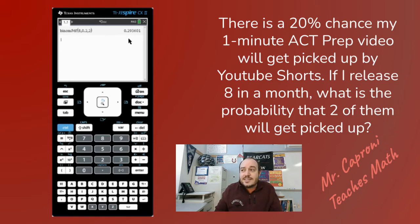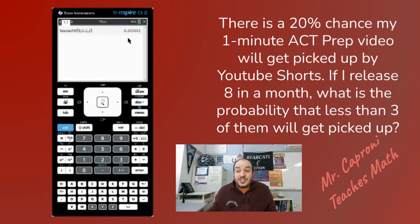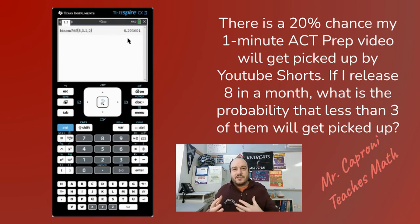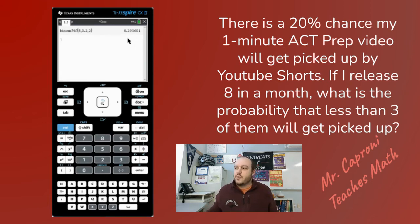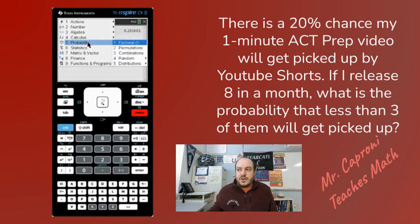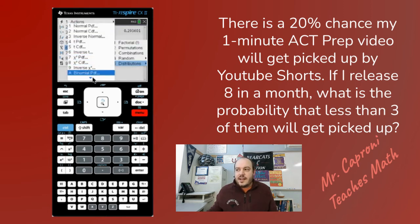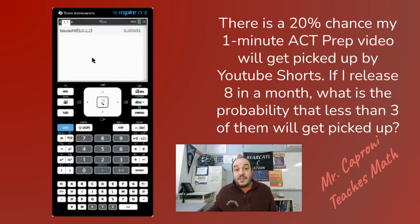That was binomial PDF. Now let's look at binomial CDF. The question has changed: what's the probability that fewer than three of the eight videos get picked up? This is a range — 'less than three' means anywhere from zero to two successes, since you can't have negative successes. Instead of PDF, we go into the menu, navigate to Distributions, and select binomial CDF. You can scroll down to find it using the arrow.